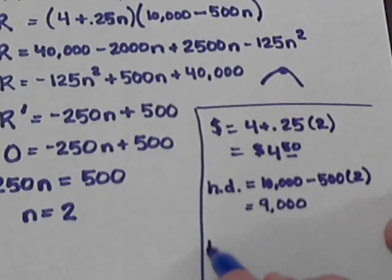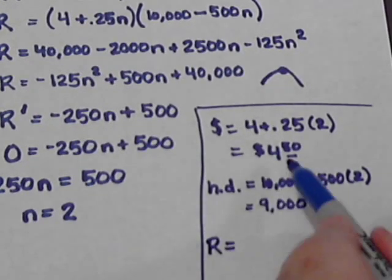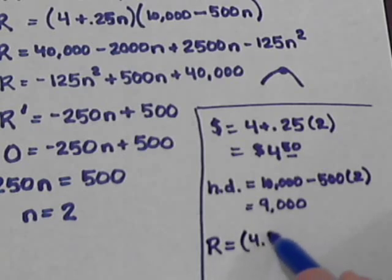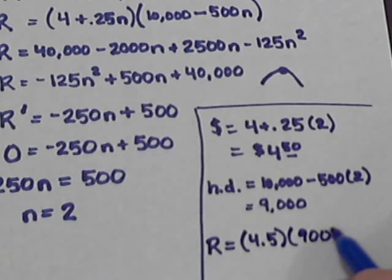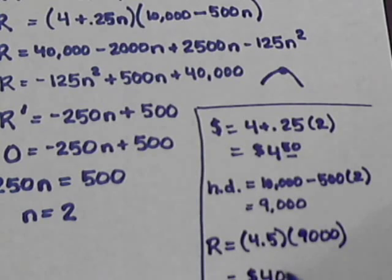So, finally, what will our revenue be? Well, we just multiply the $4.50 for one hot dog times the 9,000 we expect to sell. And we get a final total of $40,500.